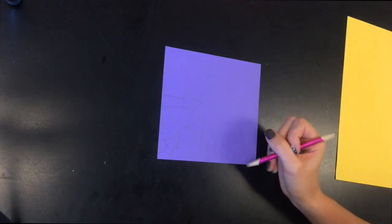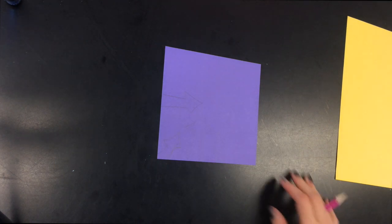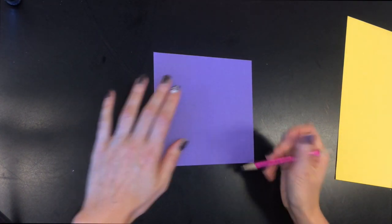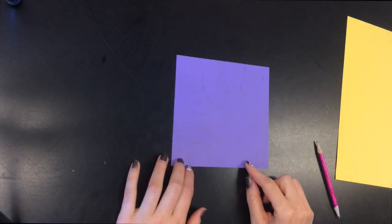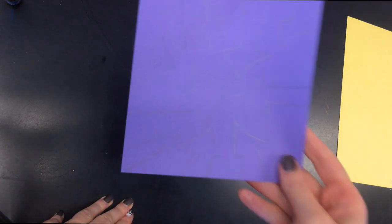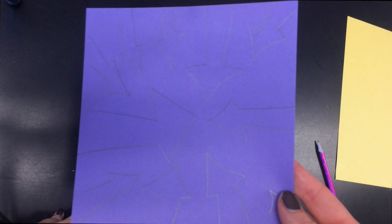So fill up the whole paper with whatever your design is going to be. I don't know how well you can see this. It might be a little hard. Okay, now I have my design all put on here. And I just did all arrows on mine.